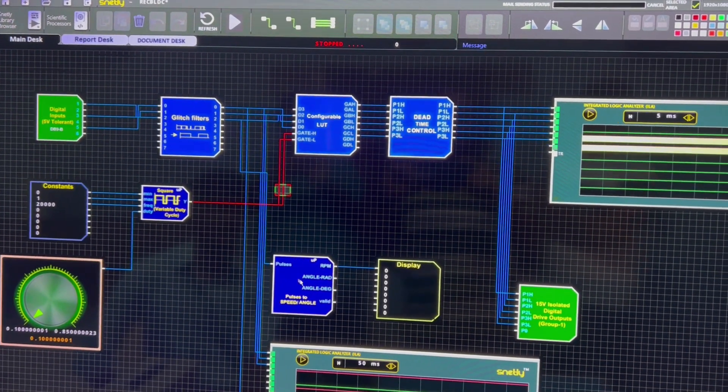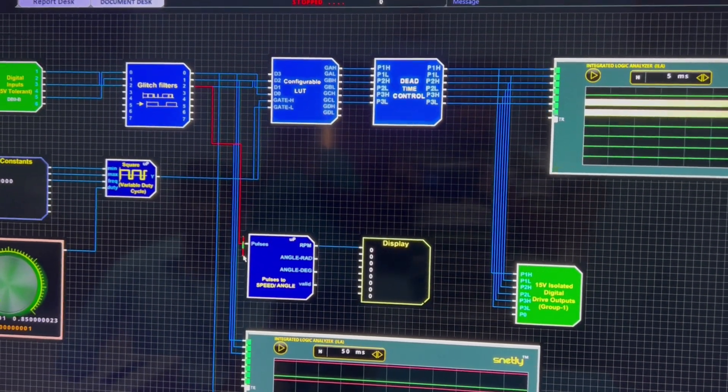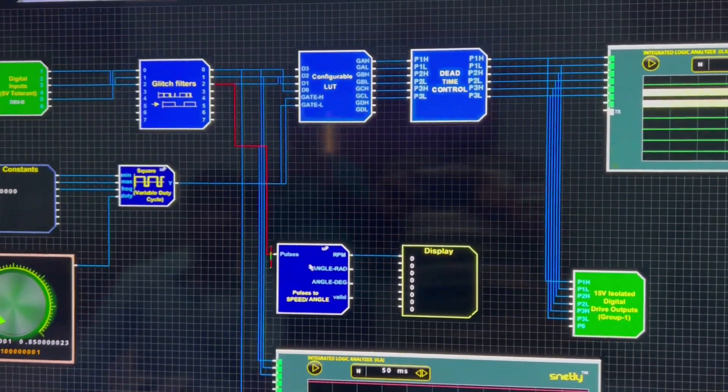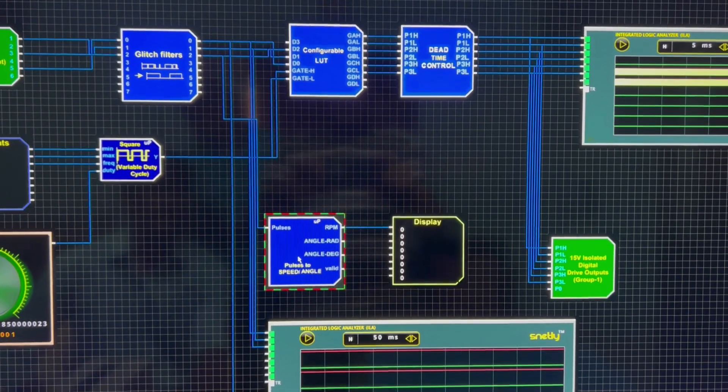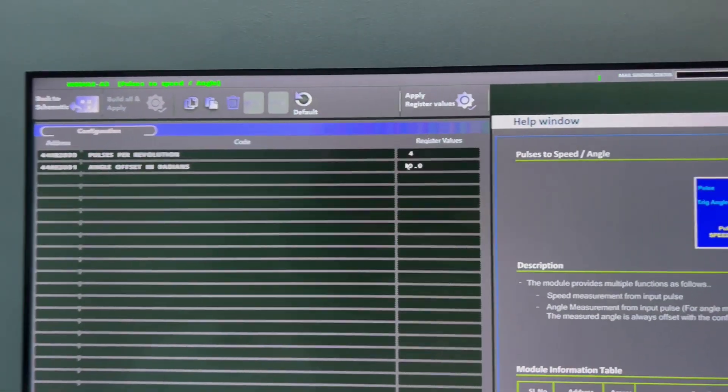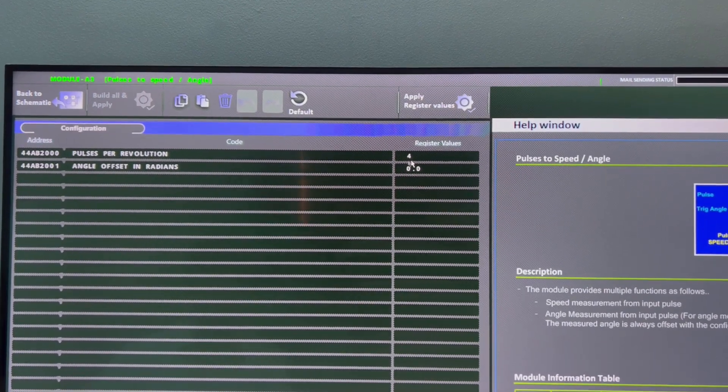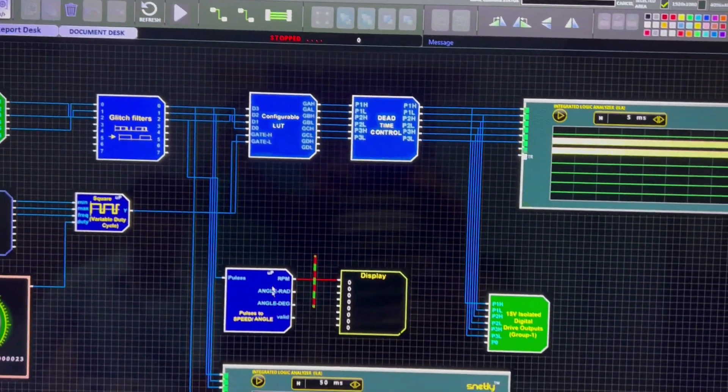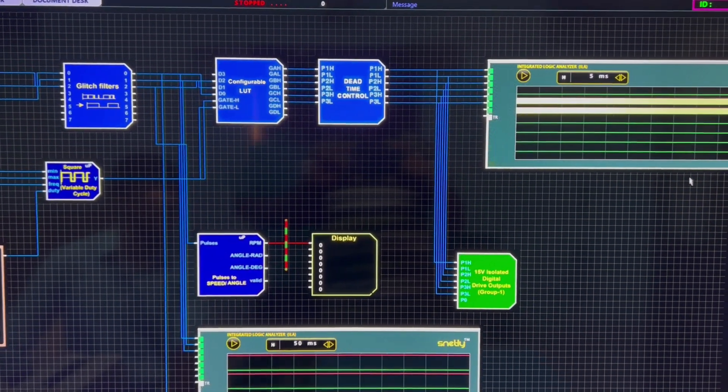For the speed measurement, we are using one of the speed feedback from the encoder. We need to configure the number of PPR in the motor. Here the number of PPR of this motor is 4, so we are configuring it to 4. Directly we are measuring the RPM, revolution per minute.